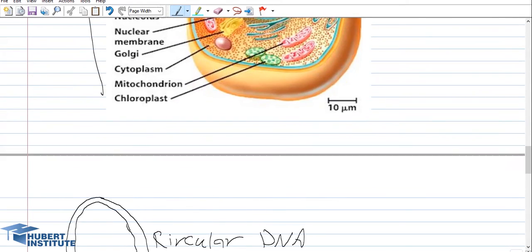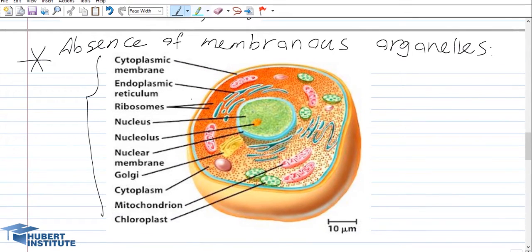As mentioned previously, prokaryotic cells don't have any membranous organelles — an absence sometimes referred to as lacking internal compartmentalization — and this is the most significant difference between prokaryotic and eukaryotic cells. Membranous organelles are specific structures found only in eukaryotic cells, not prokaryotic cells. Each membranous organelle performs a specific function; for example, the rough endoplasmic reticulum is responsible for making proteins.